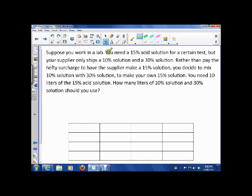So what we know is we need a 15% solution. We have a 10% solution and we have a 30% solution. So you're going to mix the two and you are going to make a 15% solution and you need 10 liters of that 15% solution.